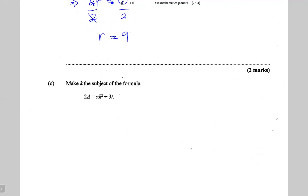At the bottom, I'm asked to make k the subject of the formula. For k to be the subject, it must be by itself on one side, with a positive power of 1 and a coefficient of 1. So let's isolate k. Positive 3t goes over and becomes negative, giving 2a minus 3t equals pi times k squared.